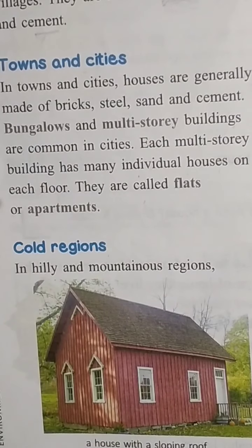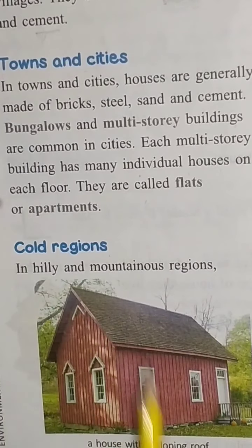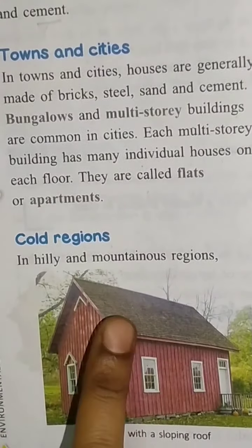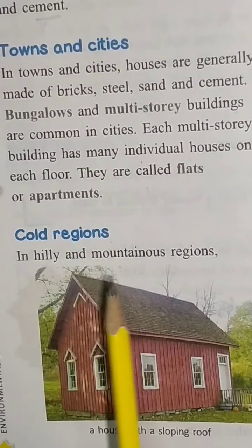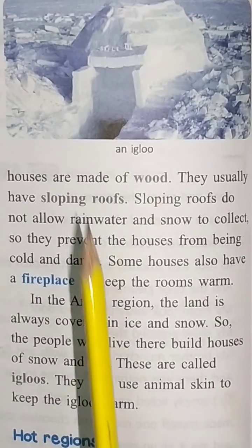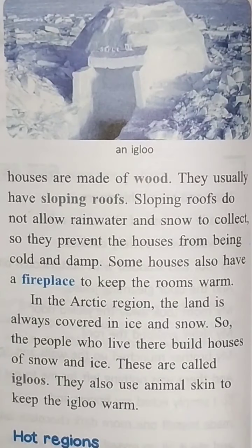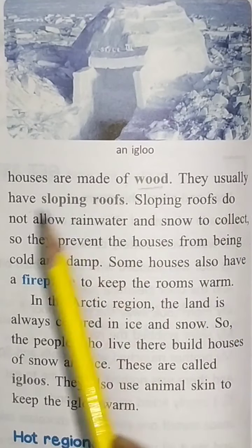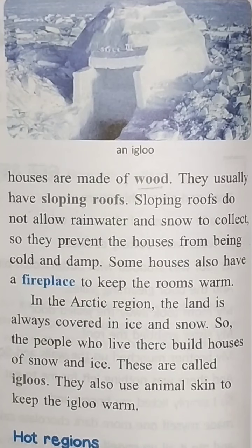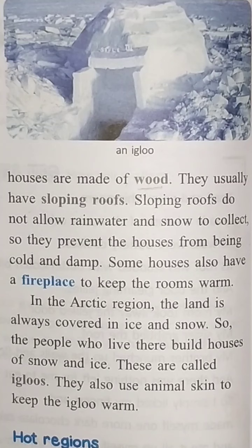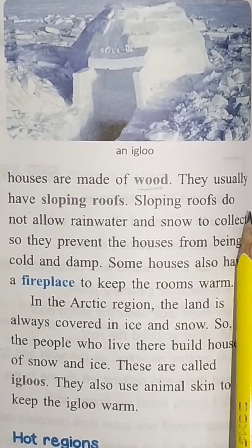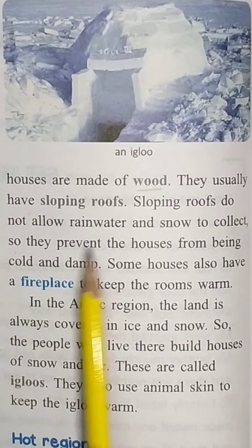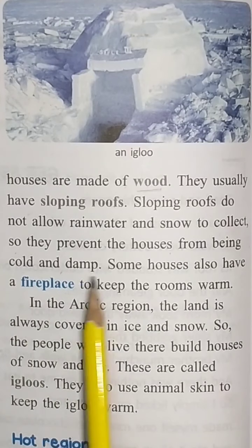Now comes cold regions — johan bhoat thand hoti hai. In hilly and mountainous regions, houses are made of wood. Beta, pahari ilaqon mein jo hote hain, ghar wo zyada tar lakdi ke ghar hote hain. They usually have sloping roofs, taaki upar baraf gire to woh slide karke niche gir jayegi. Sloping roofs do not allow rain water or snow to collect, so they prevent the houses from being cold and damp.